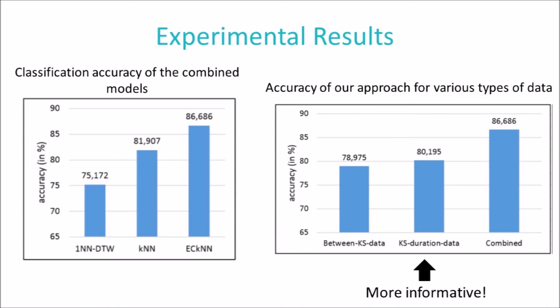In these two figures you can see our experimental results. In the first diagram, we can see the classification accuracy of the combined models — using both the time series of times between consecutive keystrokes and the duration of each keystroke. It can be seen that our approach, DC-KNN, outperforms the baselines. In the second diagram, we can see the accuracy for various types of data, and it is clear that combining the two types gives better accuracy. Quite surprisingly, the duration of each keystroke is more informative than the other attribute.